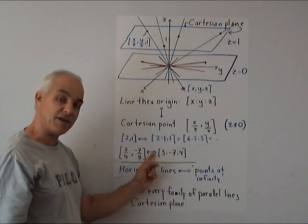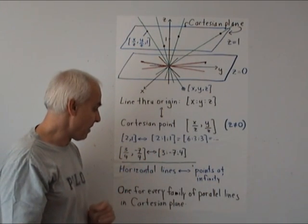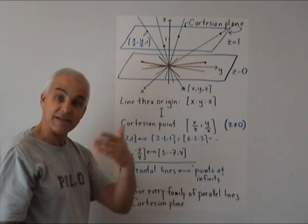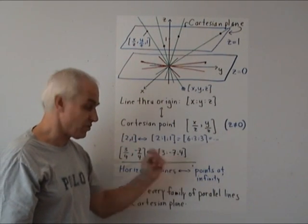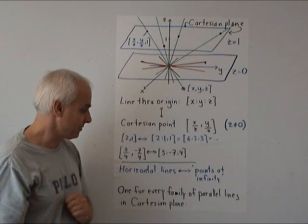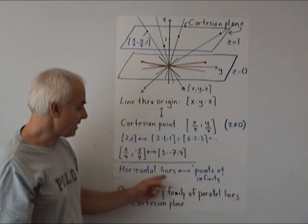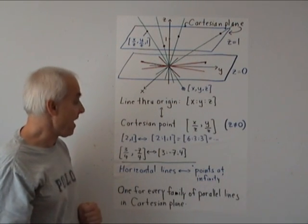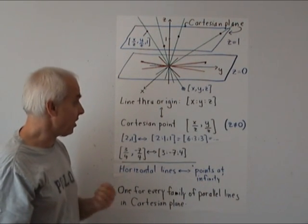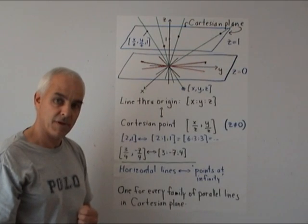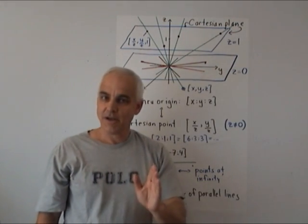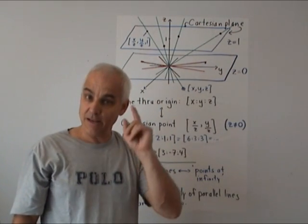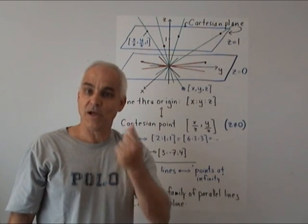If we have an ordinary point (3/4, -7/4), that's associated to this triple [3:-7:4], and that's allowed us to get rid of the fractions—only integers appearing there. So horizontal lines again are associated to points at infinity, and there's one for every family of parallel lines in the Cartesian plane.